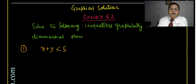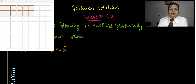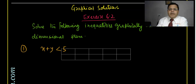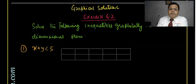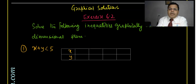You can make a table with some values — maximum three values can be taken. For x plus y less than five, I will consider x and y. For writing a solution, you need to take x plus y equal to five and plot the graph accordingly.